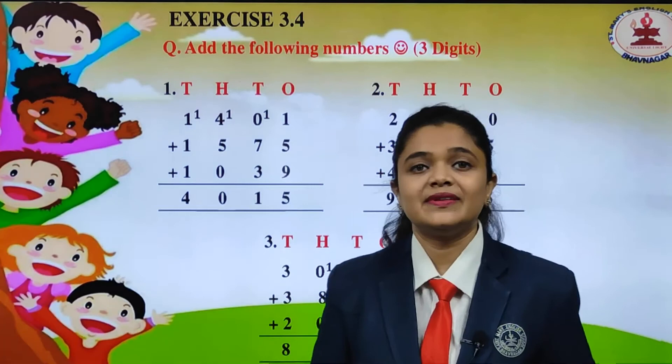Now we will add it. 1 plus 3, what we will get? We will get 4. 4 plus 6, we will get 10. 10 plus 7, we will get 17. Again 1 carry, 7 down.